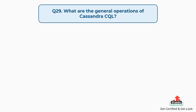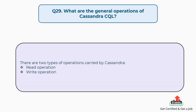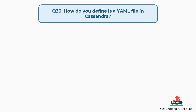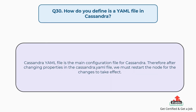Question number twenty-nine: What are the general operations of Cassandra CQL? There are two types of operations carried out by Cassandra: read operation and write operation. Question number thirty: How do you define a YAML file in Cassandra? Cassandra YAML file is the main configuration file for Cassandra. Therefore, after changing properties in the Cassandra.YAML file, we must restart the node for the changes to take effect.